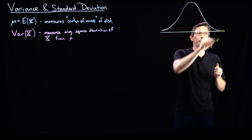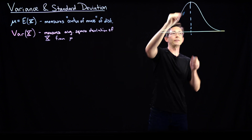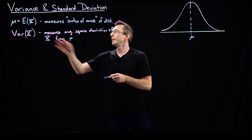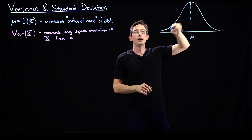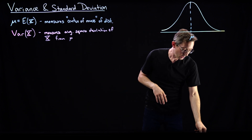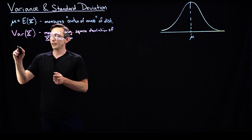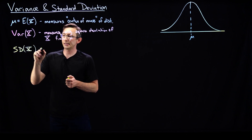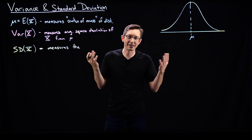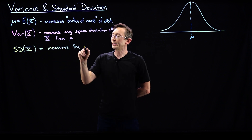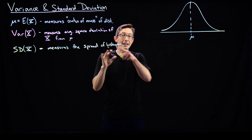Let's say I have some probability distribution function like this nice Gaussian. Then the mean — the expected value — is the center of this distribution, mu. The variance is the expected squared deviation of x from this mean value mu. And the standard deviation, SD of x, essentially measures the spread — the spread of the histogram or PDF of x.